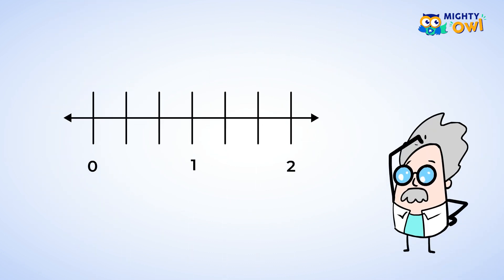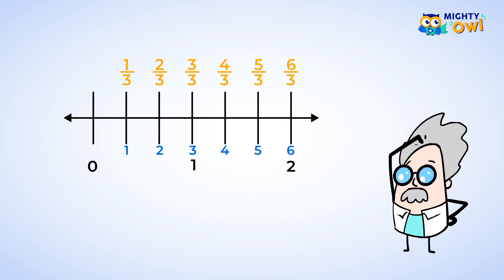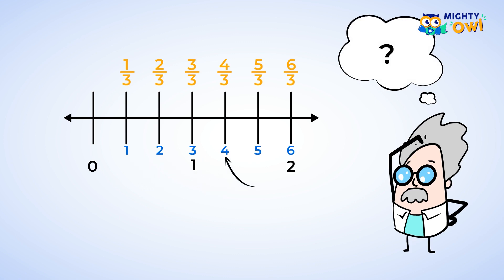Now that we've extended our number line, let's do some practice with it. Here we have a number line, and between each number — the 0, 1, and 2 — there are 3 sections. This means that we must be dealing with a denominator of 3, or thirds. Identify 4 thirds by placing the dot on the number line at 4 thirds. The numerator, or top number, is 4, and so we need to count 4 sections: 1, 2, 3, 4. This must be our 4 thirds, so we place our dot here.